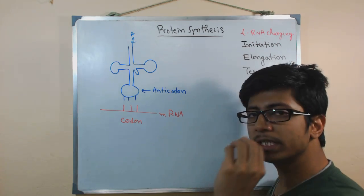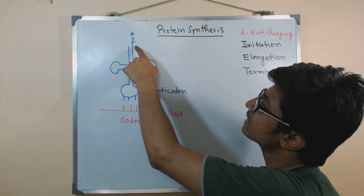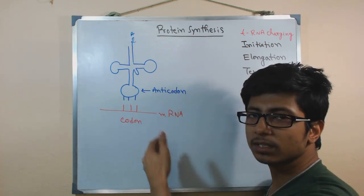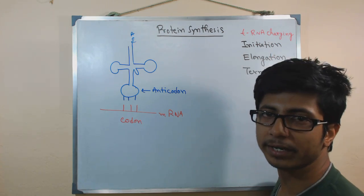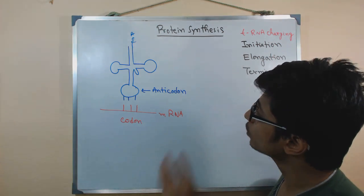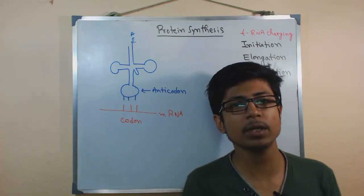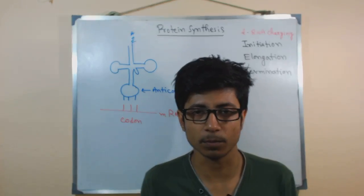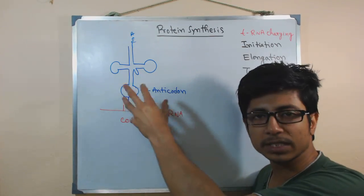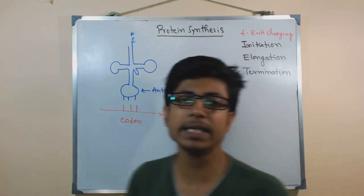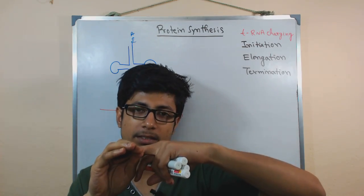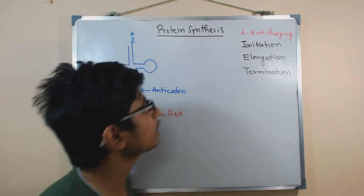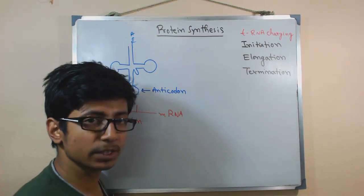Those amino acids will be added to the ACC section of the transfer RNA. The amino acid is present in our body after all the metabolic pathways, and tRNA is also present. But the tRNA must be added with the amino acid — that part is called the tRNA charging machinery. This charging machinery occurs in two different stages.